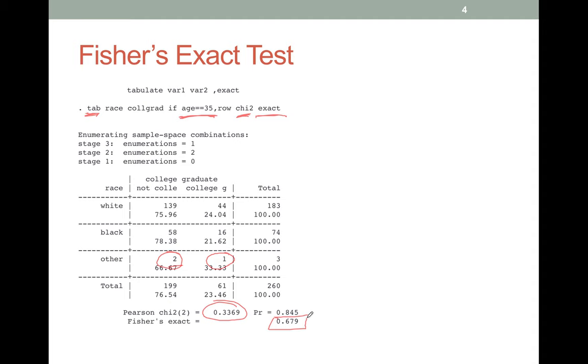Now why don't we just use the Fisher's exact test all the time? Well, as soon as your matrix gets much more complicated than this one, the Fisher's exact test is pretty hard to compute. If you ever try to do a Fisher's exact test on a 5 by 5 matrix, hopefully you've got a lot of time on your hands because it's going to take an extremely long time to compute. And that's it, how to implement chi-square tests and Fisher's exact tests in Stata.